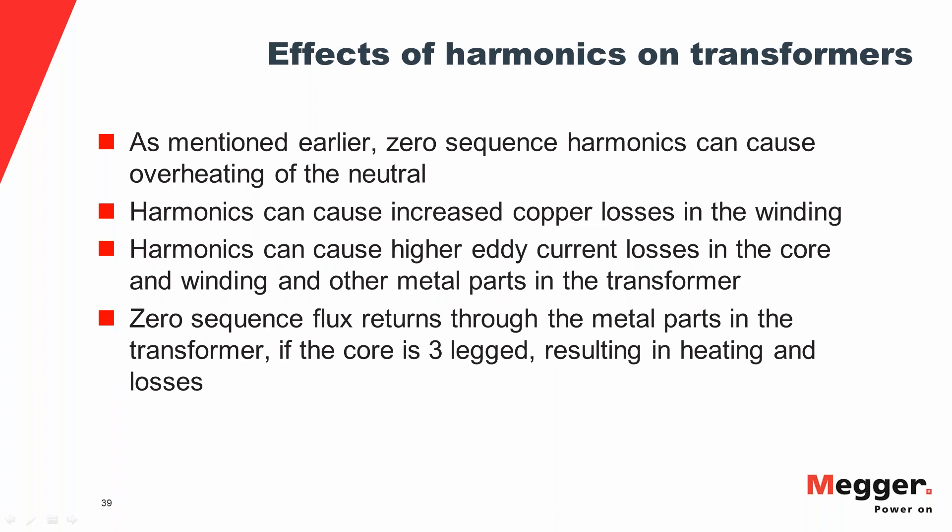Larger transformers usually have a five-leg core with three winding legs and two auxiliary limbs; smaller transformers have three-leg cores. When zero-sequence currents are present, zero-sequence fluxes are generated in the core and need a return path. In a three-leg core, the only return path is through the structural metal parts of the transformer — parts not designed to handle flux flow — causing significant heating and deterioration. Zero-sequence fluxes can therefore cause serious problems in three-leg core transformers.